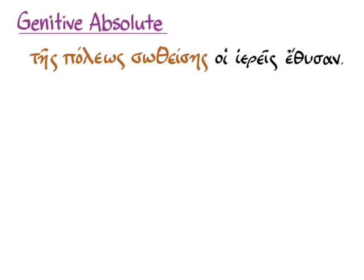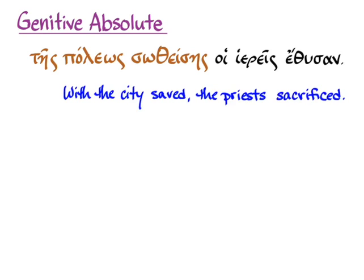Here's another example. Again, you see the genitive noun 'teis polios' with a genitive participle agreeing with it — 'sotheses.' We can do the default translation 'with the noun being verbed': 'with the city saved,' because it's an aorist participle here, 'the priests sacrificed.' There's nothing in the main clause for that participle to agree with, so in the subordinate participial phrase, what's doing the participle still agrees with it — which is our rule for participles — and we translate it: 'with the city saved, the priests sacrificed.'